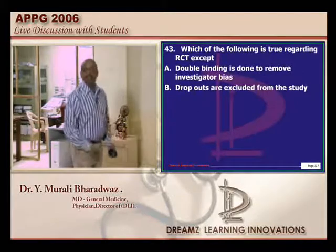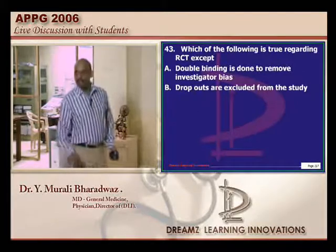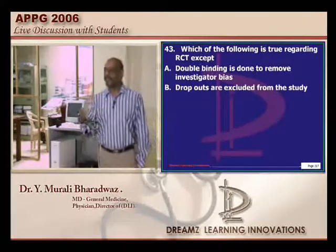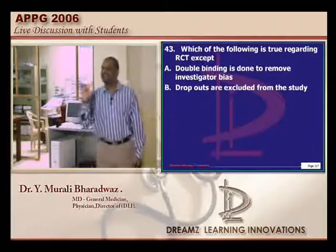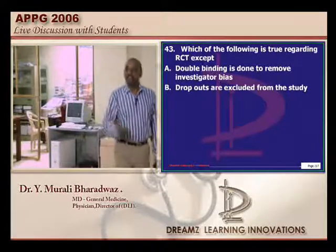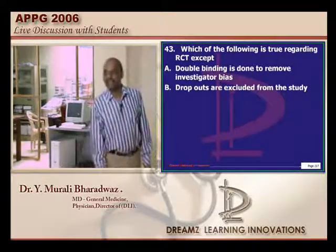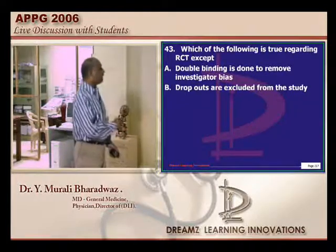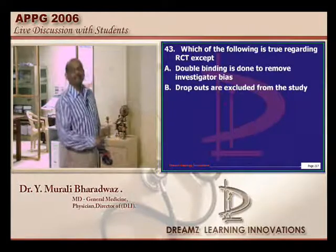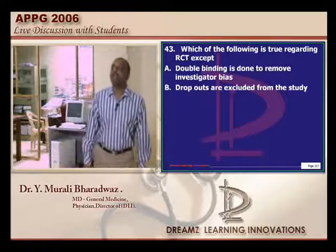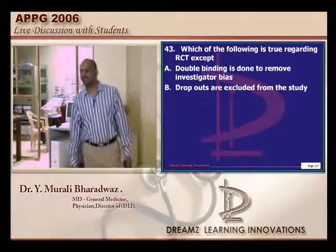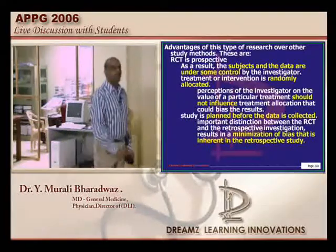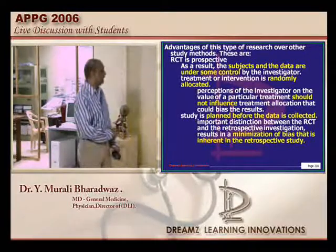Regarding randomized control trial, we got up to half of the body — two options we got, two more options we need to get. But already the answer is there in half of the body itself. What happened before the death? Dropouts are excluded from the study is a wrong statement. Dropouts are included in the study is what needs to be remembered. Now I will take a couple of minutes — what do you mean by randomized control trial?